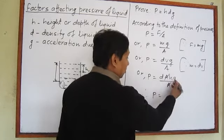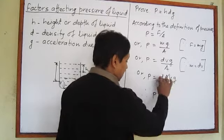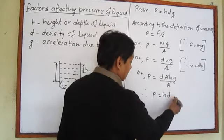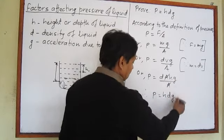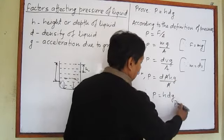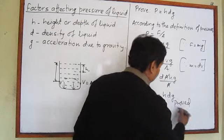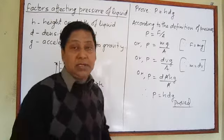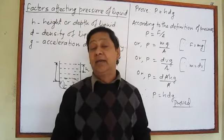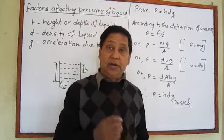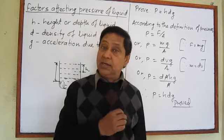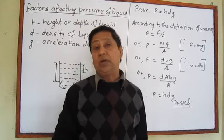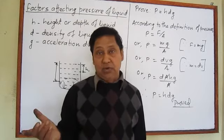We can write the factors in any order. This way we have proved that pressure of liquid depends upon three factors: height or depth of the liquid, density of the liquid, and acceleration due to gravity.